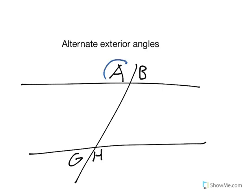Angles A and H are alternate exterior angles, as well as angles B and G. This means that angle H is congruent to angle A, and angle B is congruent to angle G.